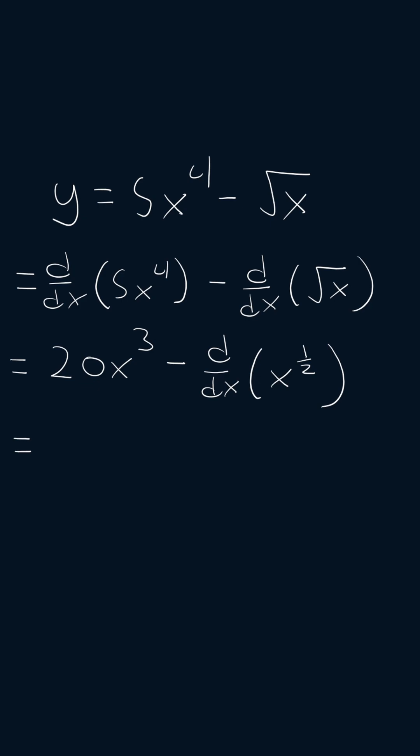Now we can apply the power rule. So we're going to get 20x cubed minus 1 half times x to the power of 1 half minus 1.